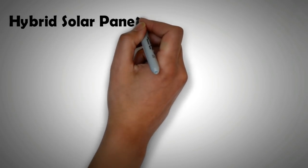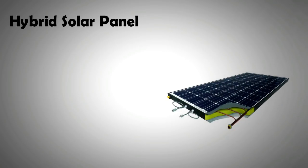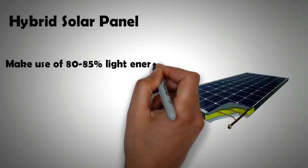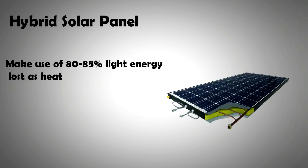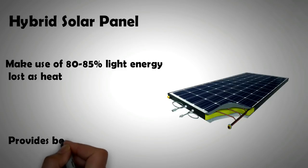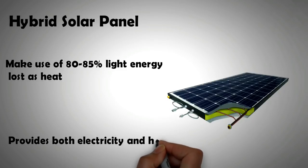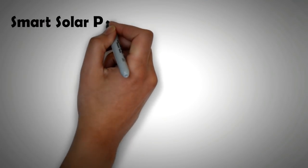The second type of cells that are upcoming and hold a lot of promise are the hybrid solar panels. Again, the idea here is to use the remaining 80 to 85% energy in light that is lost as heat. In hybrid solar panels, solar PV cells are stacked on top of water heaters. The hybrid solar panel therefore provides electricity as well as heat and will be very useful for European climate.